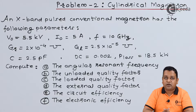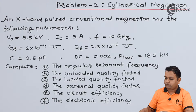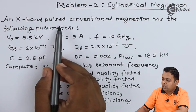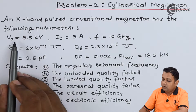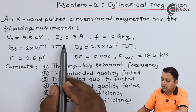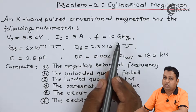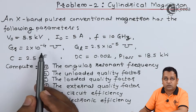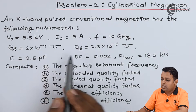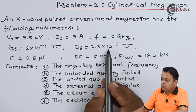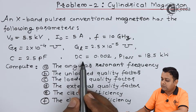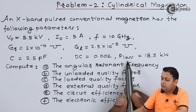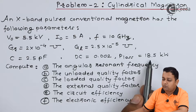For the cylindrical magnetron, we have been provided with the following problem statement. An X-band pulsed conventional magnetron has the following parameters: V0 = 5.5 kV, I0 = 5 Amperes, f = 10 GHz, GR = 2×10⁻⁴ Mhos, GL = 2.5×10⁻⁵ Mhos, C = 2.5 pF, DC (duty cycle) = 0.002, and P_loss = 18.5 kW.